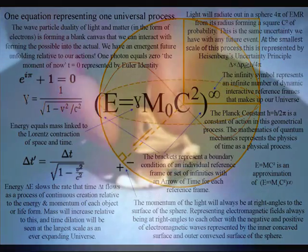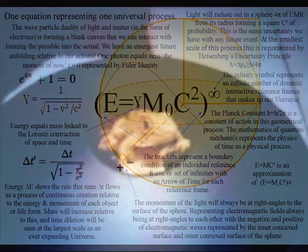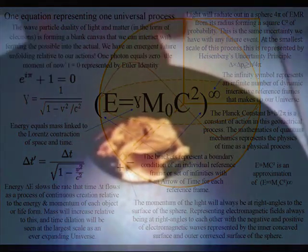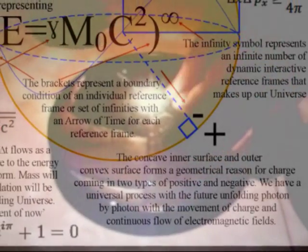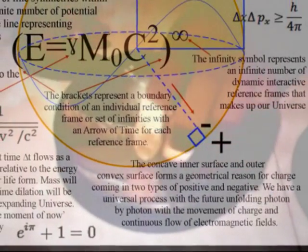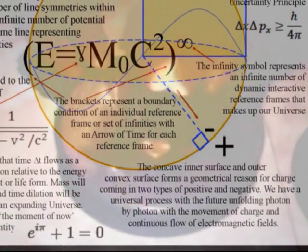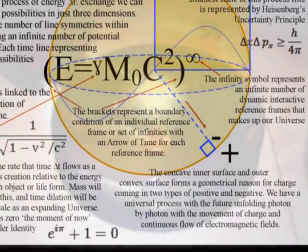In such a theory, the information for the three dimensions of our everyday life is encoded on the two-dimensional surface of the sphere in the form of positive and negative charge. The inner concave surface represents negative charge and the outer convex surface represents positive charge.